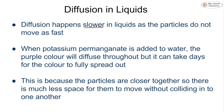Diffusion happens slower in liquids than in gases because particles in a liquid move much slower. When potassium permanganate is added to water, it could take up to days for the color to fully spread, depending on the size of the water sample. This is because the liquid particles are much closer together, making it harder for the potassium permanganate particles to spread without colliding. In gases, particles are much further apart, so diffusion happens much faster.